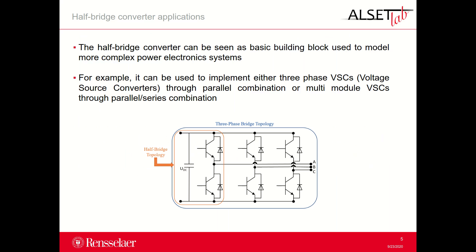Talking about the applications, the half-bridge converter can be seen as a basic building block used to model more complex power electronics systems. For example, it can be used to implement either three-phase voltage source converters through parallel combination, or multi-module voltage source converters through parallel-series combination. In the figure of this slide, you have an example of the parallel combination of half-bridge converters to build up a three-phase, three-wire, two-level voltage source converter, like a STATCOM, that is a static synchronous compensator.